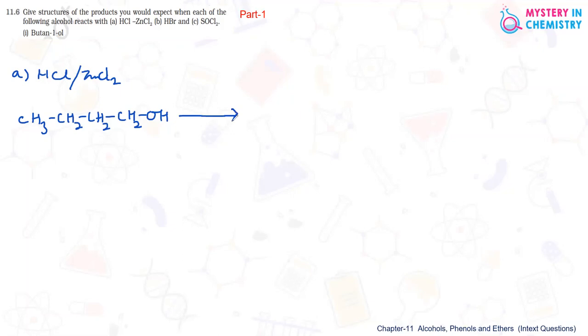This is actually Lucas reagent to detect whether the given alcohol is primary, secondary or tertiary. So in case of HCl and zinc chloride, when it is treated with primary alcohol, there is no reaction. Reaction is taking place only after heating and that we can see by cloudiness in the test tube.